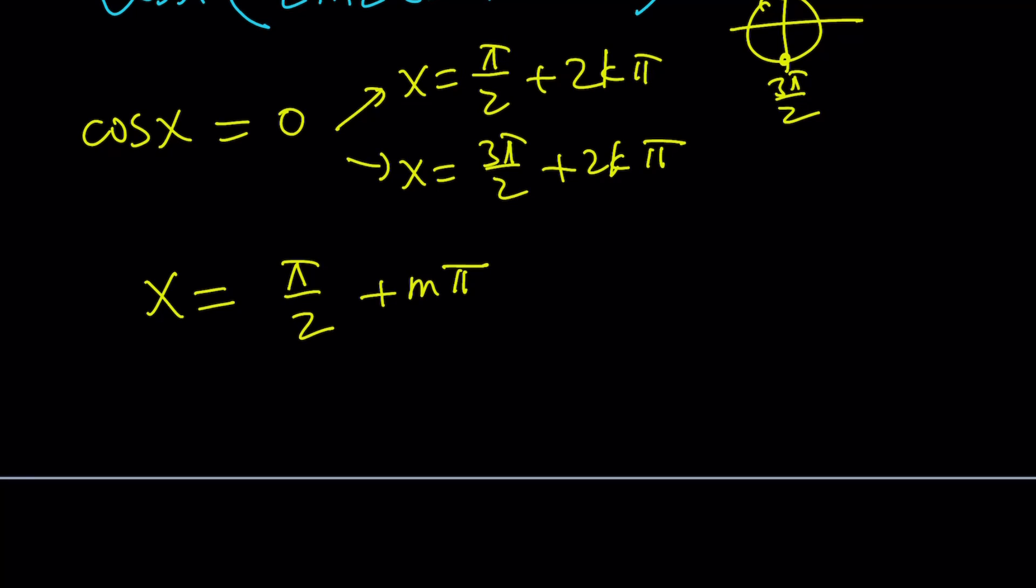What happens is if you start with pi over 2 and keep adding multiples of pi, you're going to be hitting the odd multiples of pi. You could also write it as 2m plus 1 times pi over 2. Same thing. In other words, odd multiples of pi over 2. So that's our general solution for cosine x equals 0.